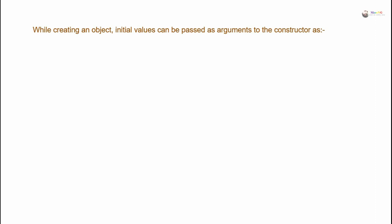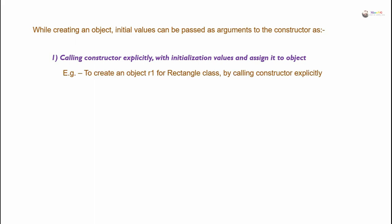While creating an object, initial values can be passed as arguments to the constructor by calling the constructor explicitly with initialization values and assigning it to the object. For example, to create an object R1 for the Rectangle class by calling the constructor explicitly: Rectangle R1 = Rectangle(3, 5). Here, R1 is the object of the Rectangle class, and on the right-hand side of the equal sign we are calling the constructor explicitly, with argument values 3 for length and 5 for breadth.